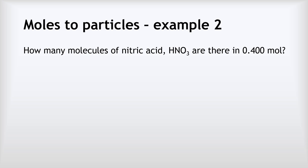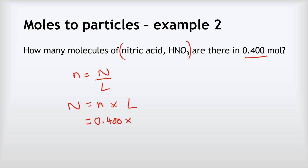Example 2: How many molecules of nitric acid are there in 0.400 moles? The actual chemical is irrelevant — it's a distractor. All that matters is that we have 0.400 moles. Using N = n × L: 0.400 × 6.02 × 10²³ = 2.408 × 10²³ as our final answer.